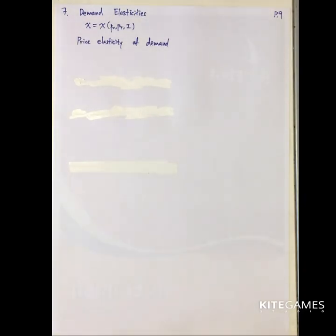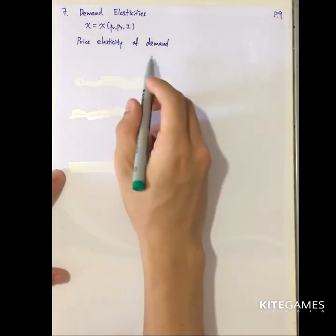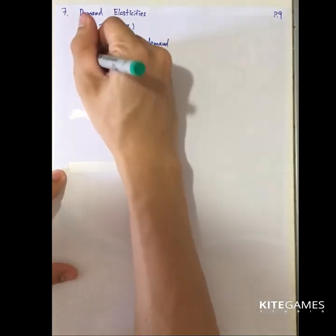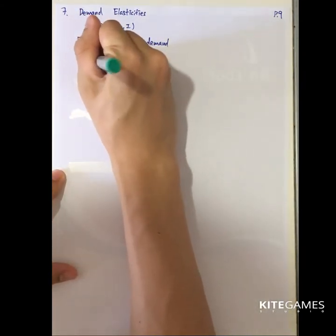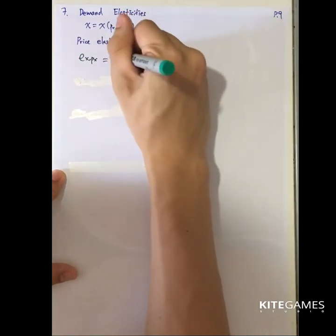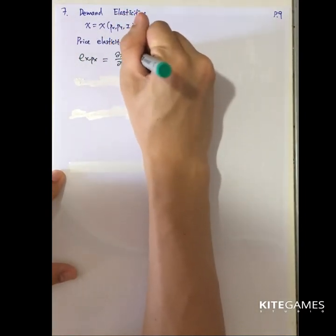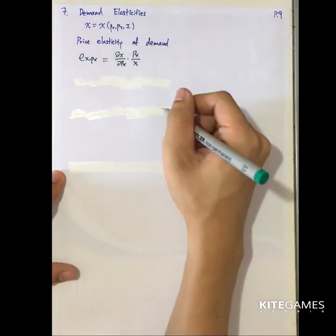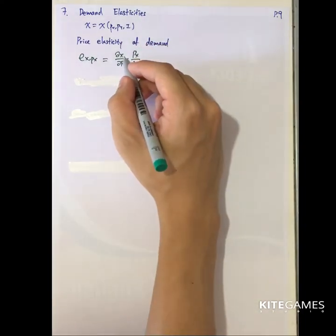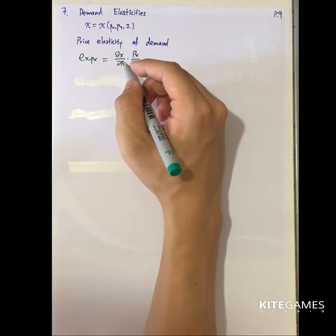Next we take a look at the concept of demand elasticity. In elasticity, we basically have three basic elasticities. The first is called price elasticity of demand. The definition is e_x_px, which is equal to (∂x/∂px)(px/x). This is basically the percentage change in quantity derived by the percentage change in price.